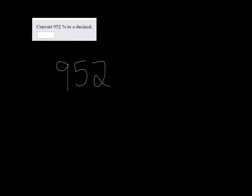Convert 952% to a decimal. So we write 952, and if it's a percent, our decimal here — since this is a whole number — is to the right of the rightmost digit, and we're going to move that over 2 to the left. So we get 9.52.